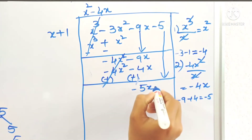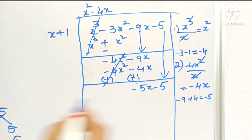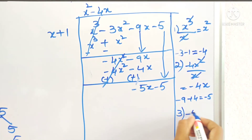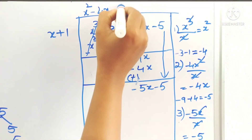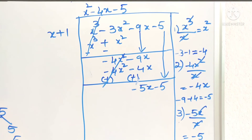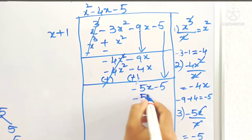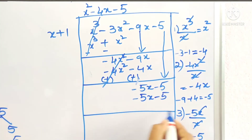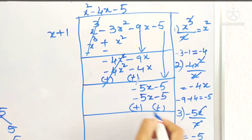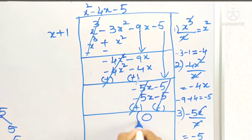Bring down the next number. For the next term in the quotient, take minus 5x divided by x, which gives minus 5. Write minus 5 in the quotient. Multiply: x into minus 5 is minus 5x, and 1 into minus 5 is minus 5. Change the signs. Both terms cancel, so the remainder is 0. The quotient we got is x square minus 4x minus 5.